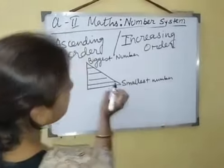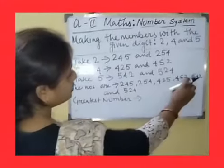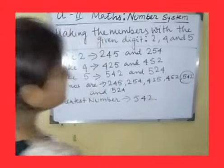So from these 3 digits we formed 6 numbers: 245, 254, 425, 452, 542, and 524. Now we can find the greatest number from these. To find the greatest number, we arrange the digits in descending order — greatest to smallest. The greatest digit is 5, then 4, then 2. So the greatest number is 542.